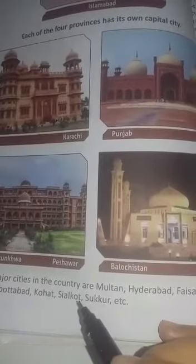Peshawar Khyber Pakhtunkhwa ka darul hukoomat hai aur Balochistan ka Quetta hai. Some other major cities in the country are Multan, Hyderabad, Faisalabad, Rawalpindi, Abbottabad, Kohat, Sialkot, and Sukkur, et cetera.